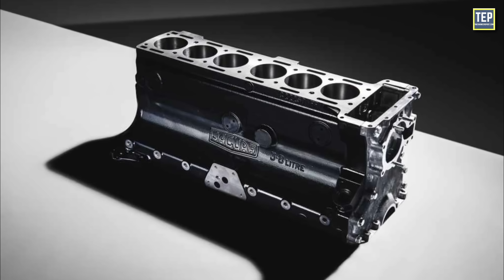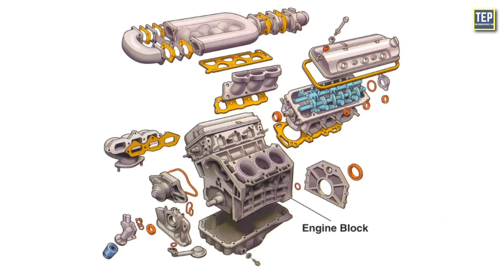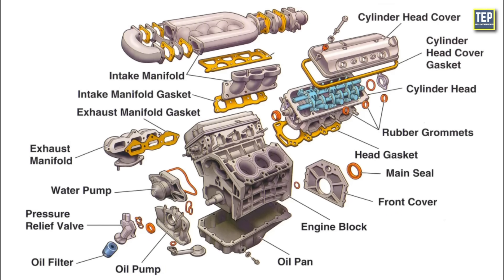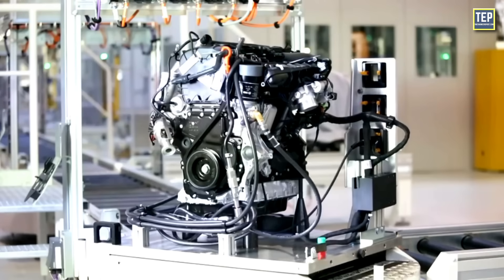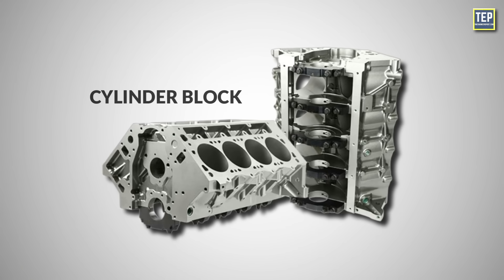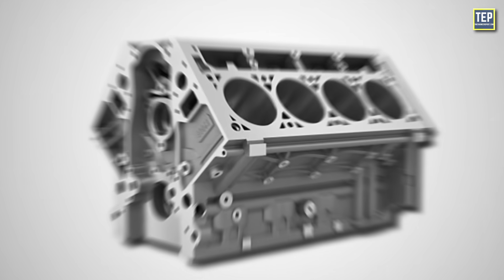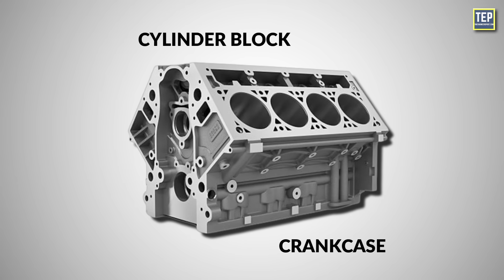The engine block is a crucial component of an internal combustion engine. It serves as the foundation for various engine parts and provides structural support. Early engine blocks consisted of just cylinder blocks, to which a separate crankcase was attached. Modern engine blocks typically have the crankcase integrated with the cylinder block as a single component.